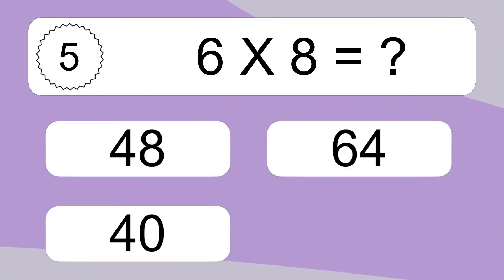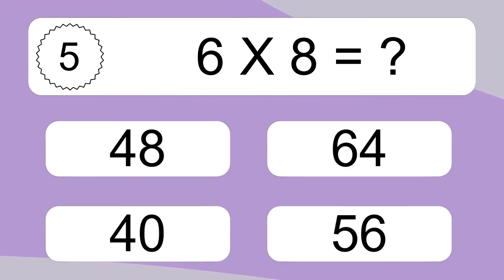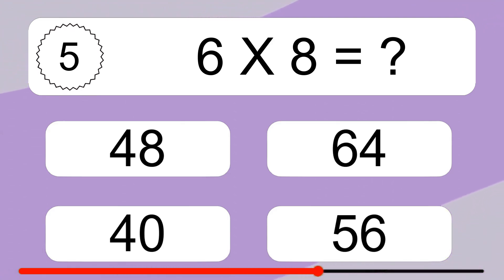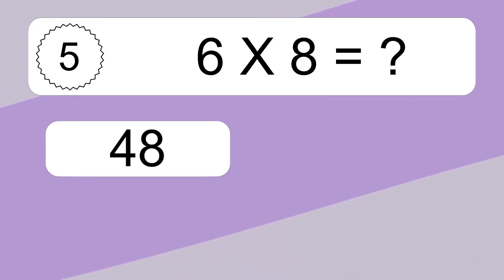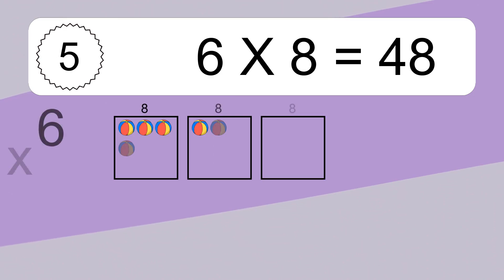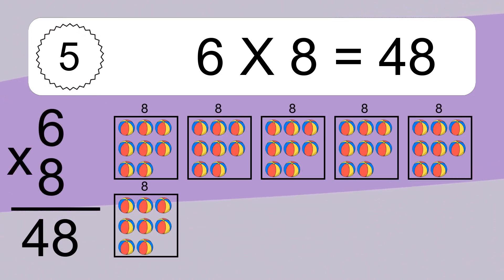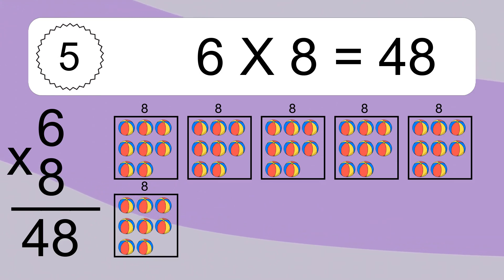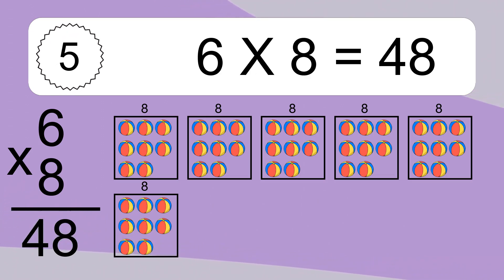6 times 8 equals what? 4 times 8. We have 6 boxes, and each box has 8 colorful balls inside. If you count all the balls in all the boxes together, you will have 6 times 8 balls. This equals 48 balls.